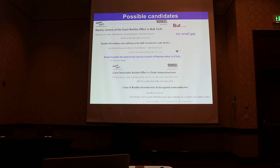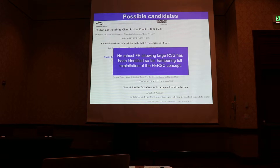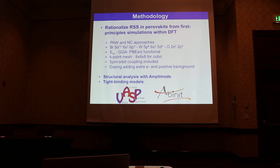People were then looking for alternative materials to show this property. Over the years there have been various reports of possibilities — in bismuth aluminate, strained strontium tantalate, heterostructures, or hexagonal semiconductors. However, these suggestions were rather exotic and did not concern truly strong ferroelectric materials. No robust ferroelectrics showing Rashba spin splitting had been identified, which is of course a problem for applications.